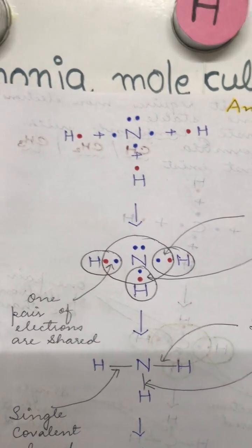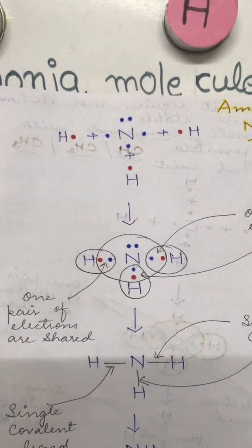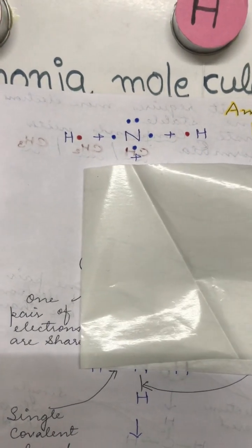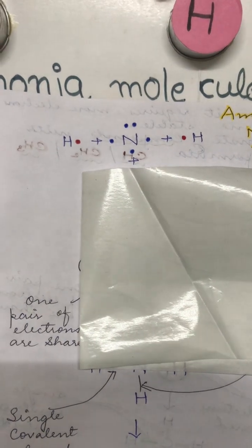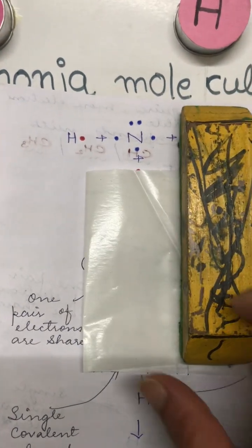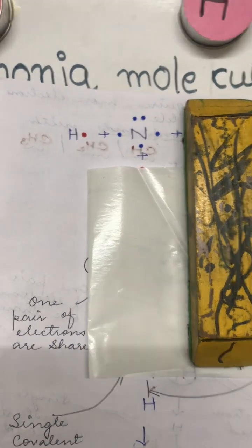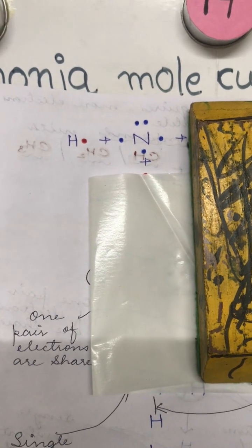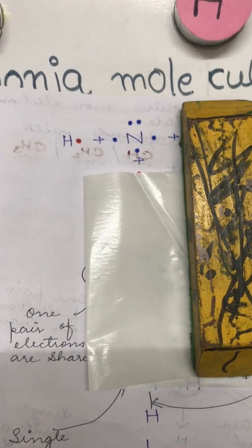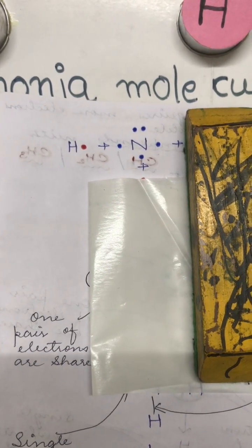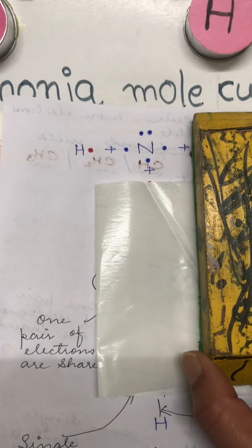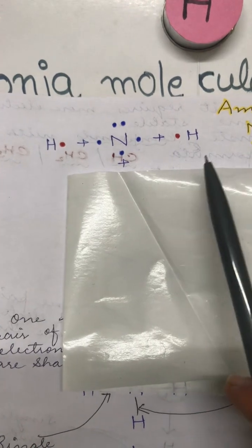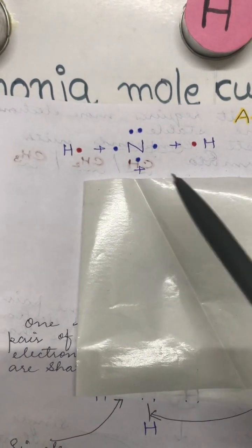Nitrogen cannot form a bond with just one hydrogen atom since that provides only one electron, leaving nitrogen still short by two electrons. If nitrogen forms a bond with two hydrogen atoms, it is still short of one more electron. So nitrogen must bond with three hydrogen atoms.